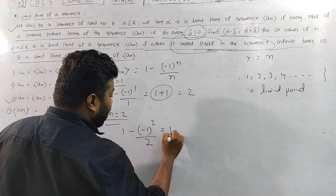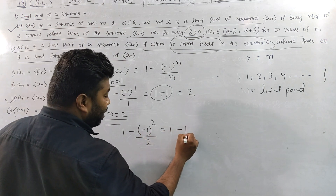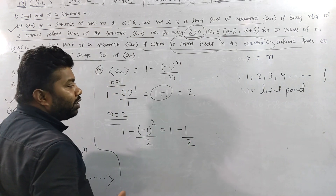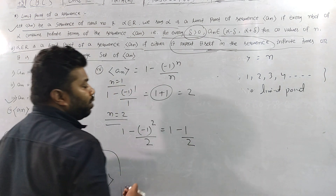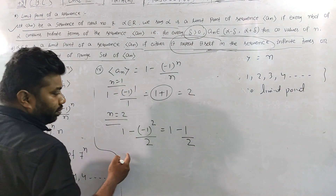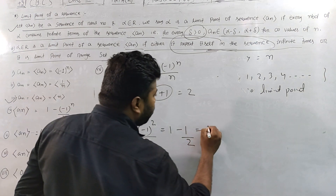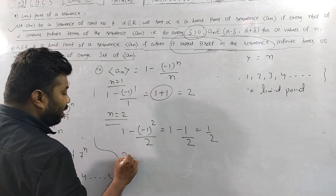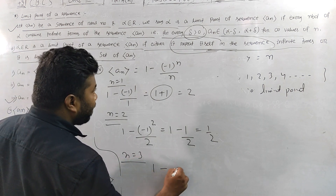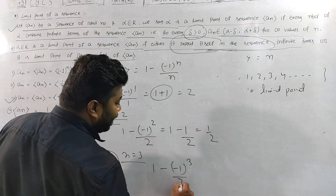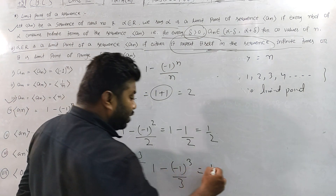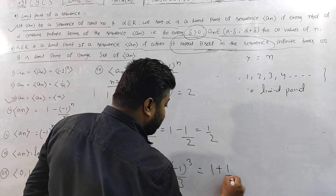So 1 minus 1/2. Then for n = 3: 1 minus ((-1)^3)/3 = 1 minus (-1/3) = 1 plus 1/3 = 4/3.